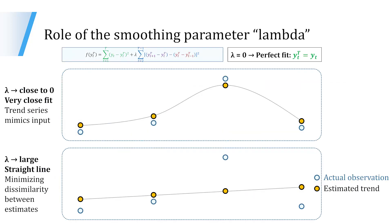The smoothing parameter lambda plays an important role. Consider the equation we saw just a moment ago. If lambda takes the value of zero, the entire blue side of the equation cancels out, and we're left with only the green side. The green side represents a minimization problem which, if solved, would yield the result of yt — meaning the trend values equaling y, the actual observations. So when lambda equals zero, we have a perfect fit: the estimated trend values coincide with the actual observations. When lambda is close to zero, we have a close fit where the trend series closely mimics the input but does not coincide with the actual observations.